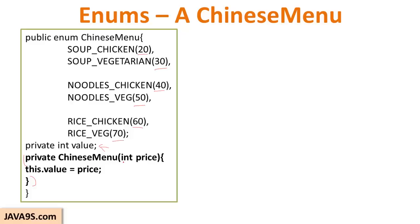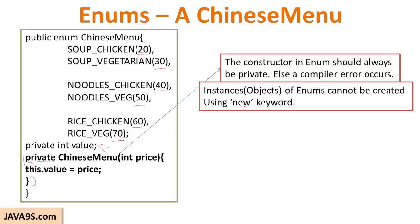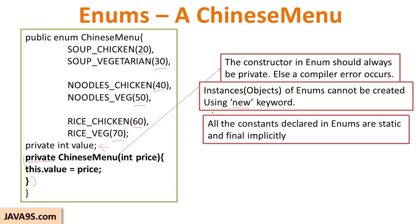The important point is that if you declare a constructor in enum it has to be private. If you don't declare it as private, the compiler will throw an error. When you declare a constructor as private, you cannot instantiate enum objects using the new keyword. Whenever you use new it will look for a constructor to create objects, but here there is no chance because the constructor is not visible. This means the only way to create objects with enum is to use static factories.